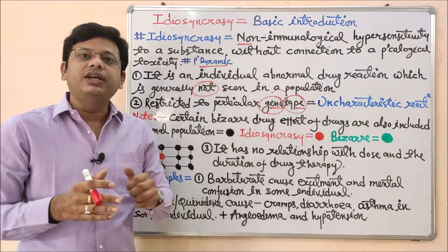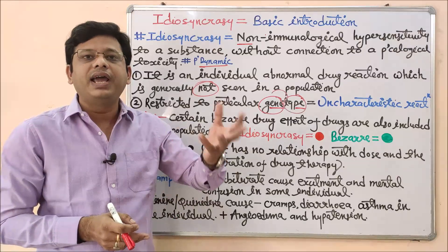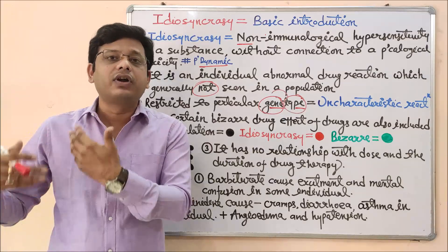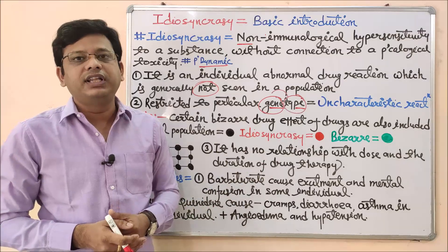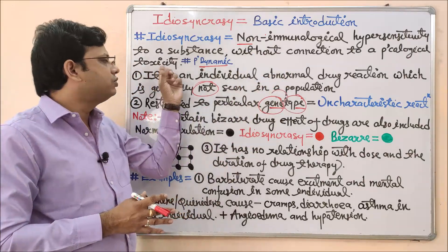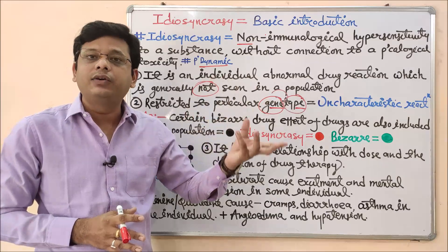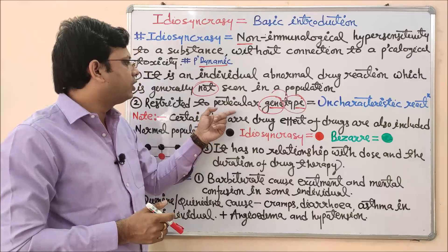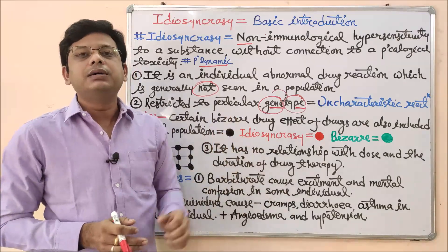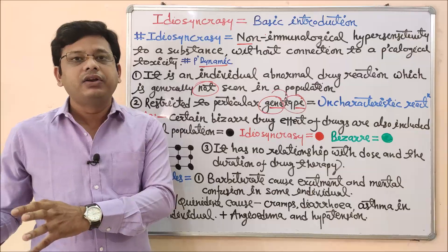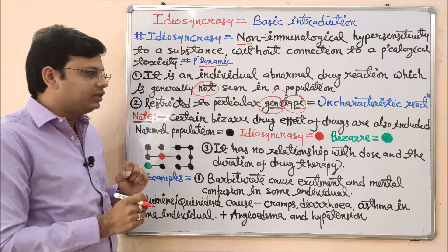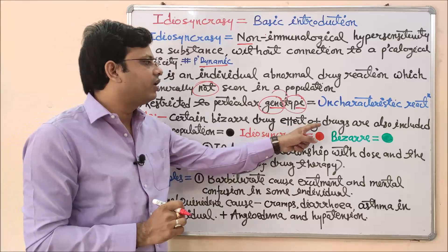In normal cases we can predict what will happen — for example, we know that paracetamol in excess dose can cause liver problems, or that an antibiotic will produce a known type of reaction. We can calculate the chances of future outcomes for normal pharmacological responses. But in idiosyncrasy, the reaction is uncharacteristic — there is no specific predictable symptom or characteristic pattern. An important note: certain bizarre drug effects are also included under idiosyncrasy.